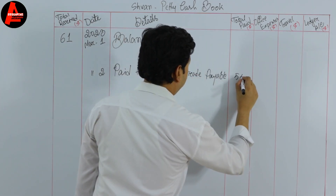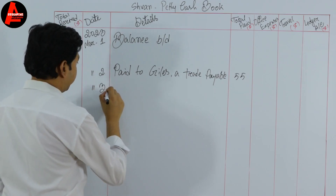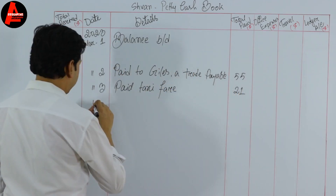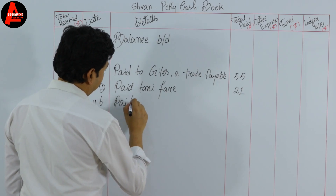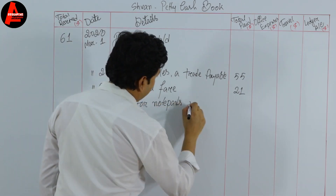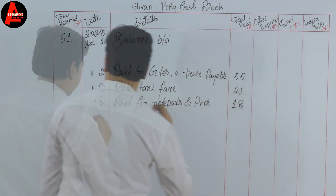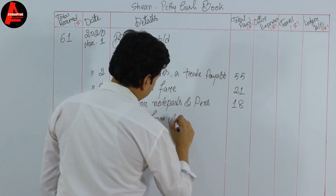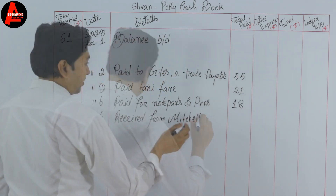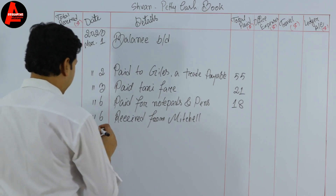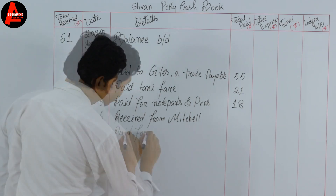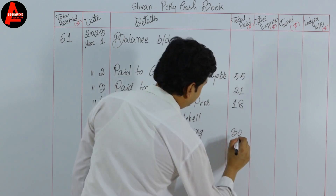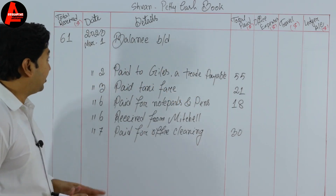The transactions are: March 2 — paid to John's trade paper, $55; March 3 — paid taxi fare, $21; March 6 — paid for notepads and pens, $18; March 6 — received from Michael (amount to be written separately); and March 7 — paid for office cleaning, $30. So here we have recorded all the transactions.